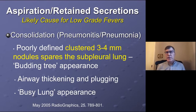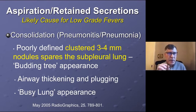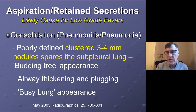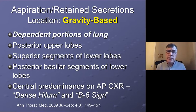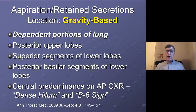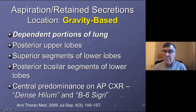You might just gestalt the radiograph and it just looks busy. And if it looks busy and you see that kind of clustered three to four millimeter nodularity, probably some aspiration slash retained secretions. It's gravity-based — that's the key thing. It goes down to the lowest point of the terminal bronchioles. If you're lying on your side, that's usually the part of the lung overlying the axilla. If you're upright, it's going to be middle lobe and lower lobes.